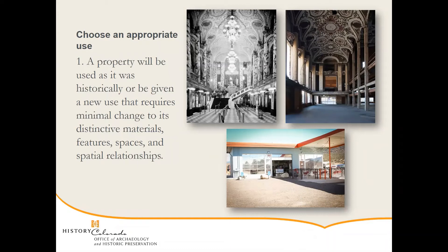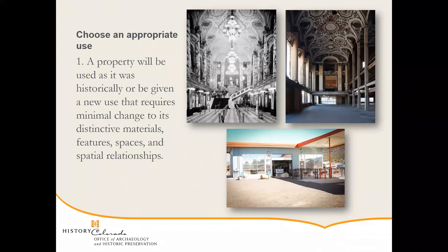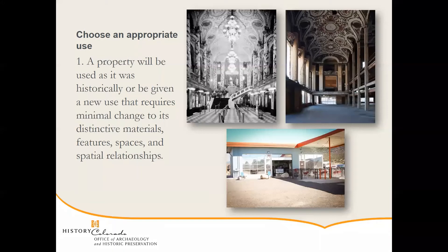Standard number one is to choose an appropriate use. A property will be used as it was historically or be given a new use that requires minimal change to its distinctive materials, features, spaces, and spatial relationships. Here we can see some examples: a historic theater in Detroit that was turned into a parking garage is not appropriate because we lost a lot of historic features in the process. The bottom example is a gas station turned into a restaurant, which required very minimal changes to the historic character of the building — that would be appropriate.